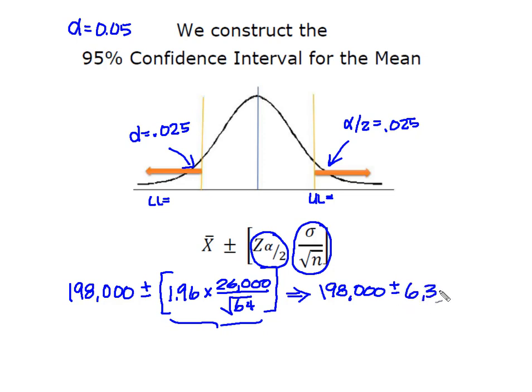That's going to give me an upper limit of $204,370 and then my lower limit is going to be $191,630.